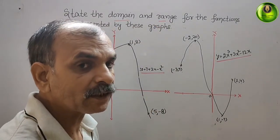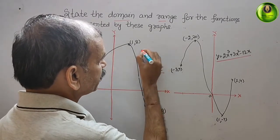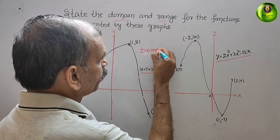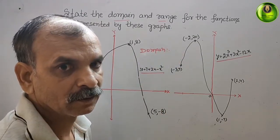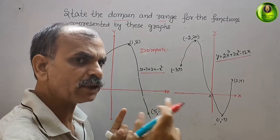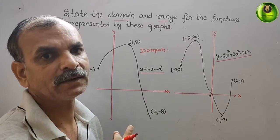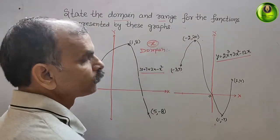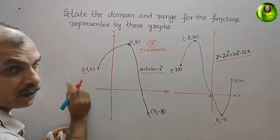The domain represents the values of x. We have to see from where to where the x values lie. Looking at the first graph, you can see here it is minus 1.